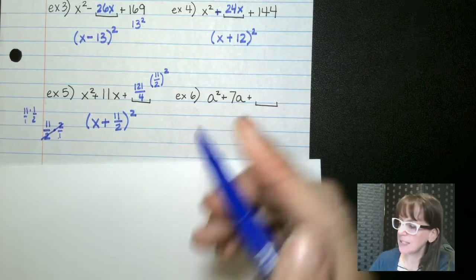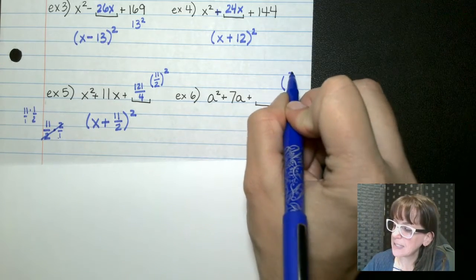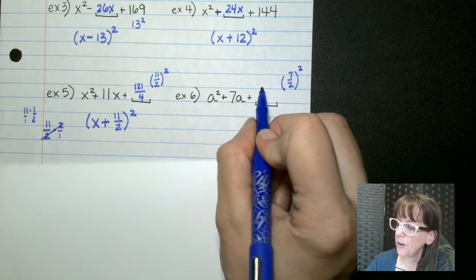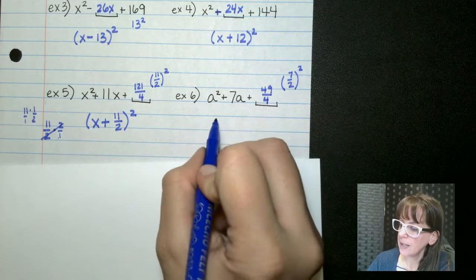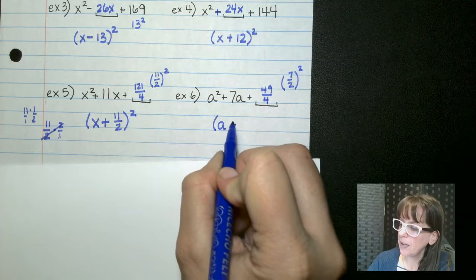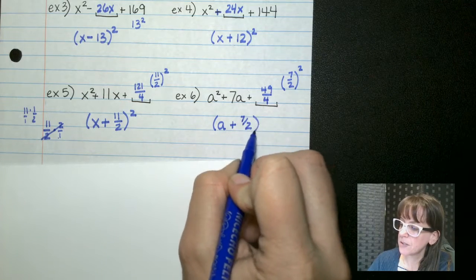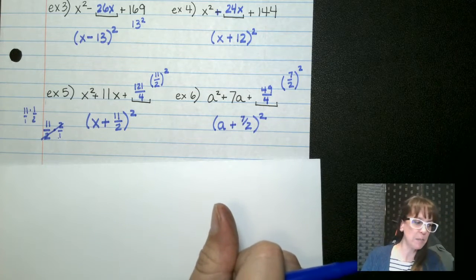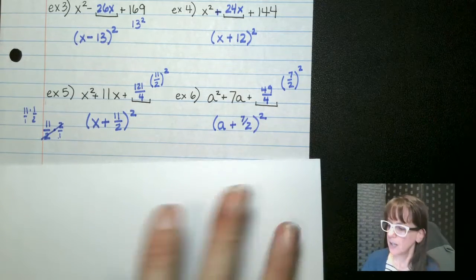So let's take half of this. Half of that would be 7 halves squared. So that's going to be 49 over four. That gives us a plus 7 halves squared. And again, if we multiply these two things together, we get 7 halves. Double it, we get 7.